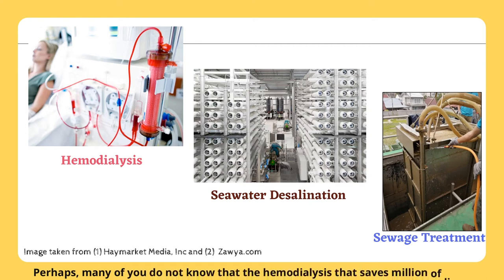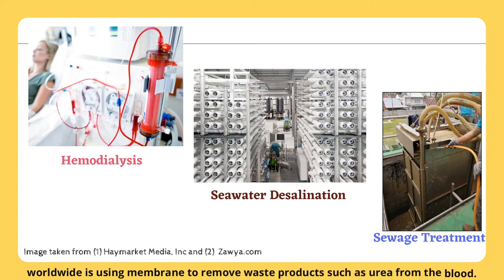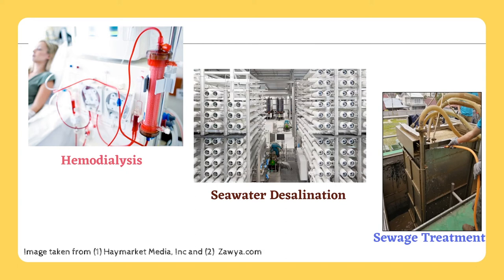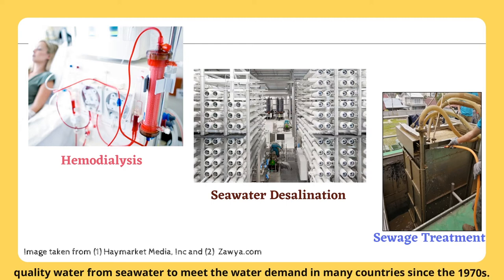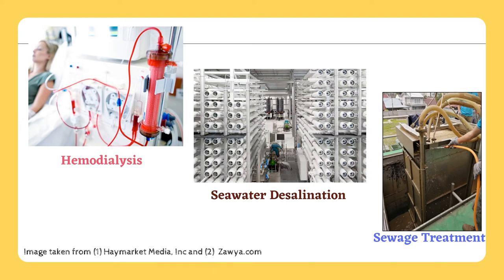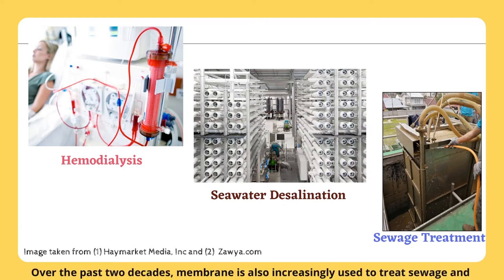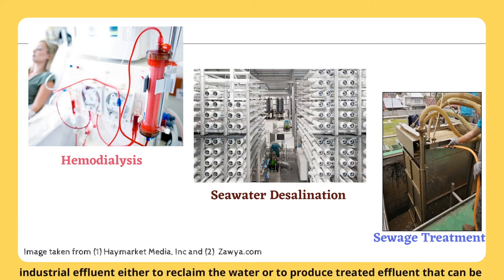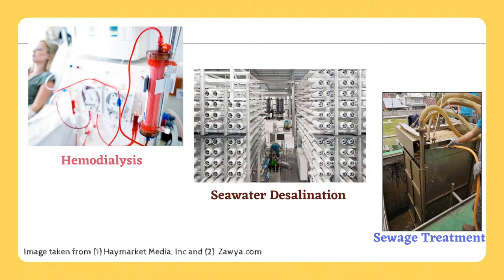Many of you may not know that hemodialysis, which saves millions of lives worldwide, uses a semi-permeable membrane to remove waste products such as urea from the blood. Besides offering treatment to kidney patients, membrane is also widely used to produce high-quality water from seawater to meet water demand in water-scarce countries since the 1970s. Over the past two decades, membrane has also been increasingly used to treat sewage and industrial effluent, either to reclaim water or to produce treated effluent that can be safely discharged to receiving water bodies.